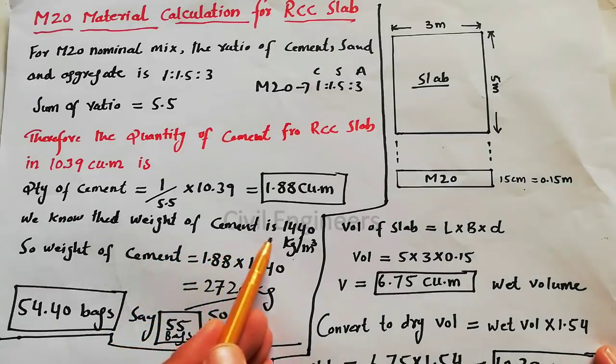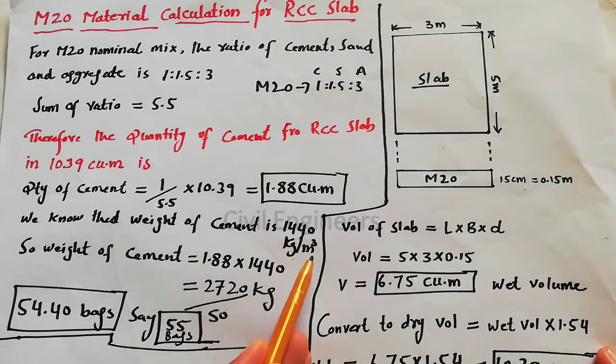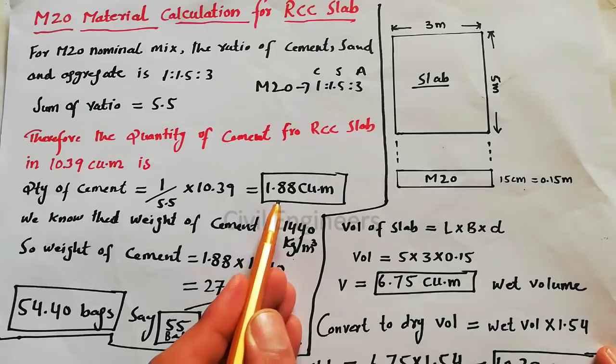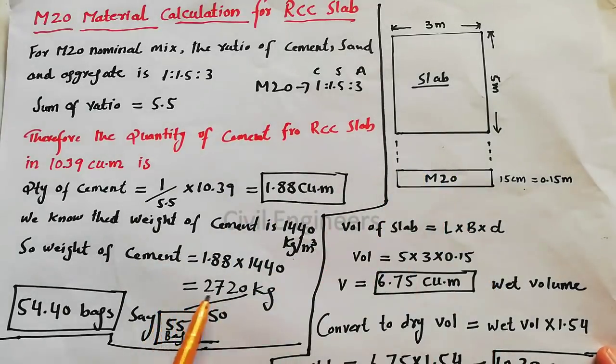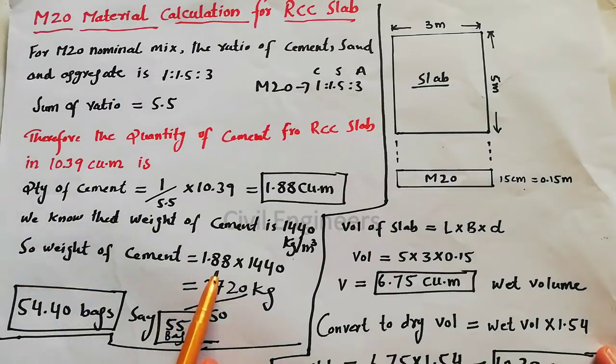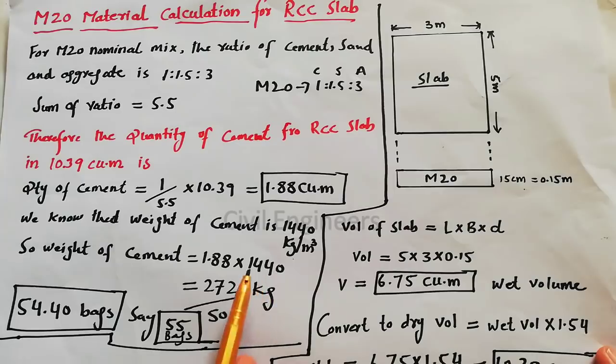We know that weight of cement is 1440 kg per cubic meter. So weight of cement equals 1.88, which is the volume of cement in this RCC slab. If the volume is 10.39, then 1.88 is the volume of cement, so multiply 1440 kg. Why 1440 kg? We know that in one cubic meter, density of cement is 1440 kg. It gives us 2720 kg total cement weight in this RCC slab.